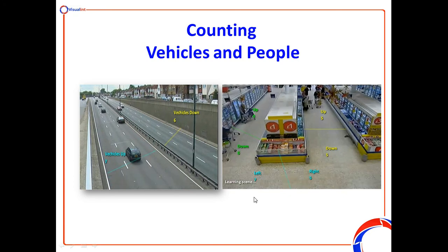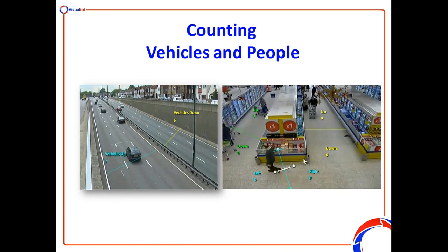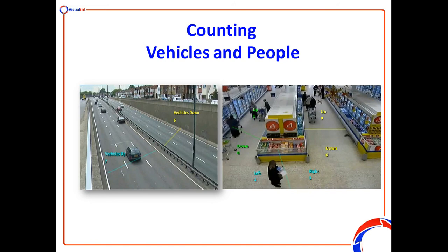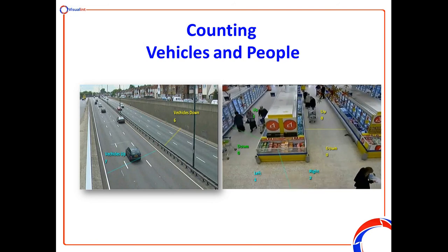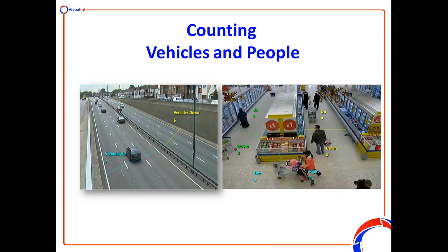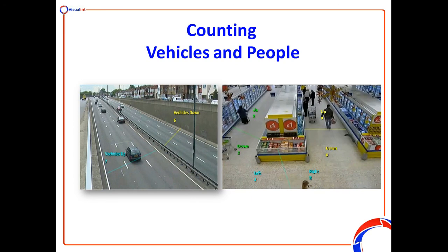This is more of a retail example, where perhaps for marketing purposes a retail chain wants to understand people flow through the store — how people move through to improve the store layout and where to put marketing assets. Here you can see a number of virtual tripwires, and as people cross through them in different directions, the counters increment accordingly. That information can be exported into Excel or any format so it can be made available to the right people.